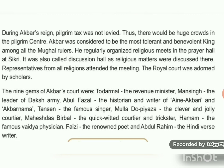Akbar was the most liberal king among the Mughals. He removed the pilgrim tax that Hindu pilgrims had to pay, and due to this, the number of pilgrims increased drastically. Akbar regularly attended religious meets in the prayer hall at Sikri, which was also called the discussion hall because Akbar used to discuss religious matters there. Representatives of all regions used to attend these meetings. Owing to such a considerate nature towards religion, one can say he was kind and liberal towards all religions. The nine gems of Akbar's court were: Todarmal, the revenue minister; Man Singh, the leader of the Daksha Army; Abul Fazal, the historian and writer of Ain-i-Akbari and Akbarnama.